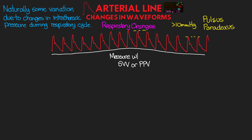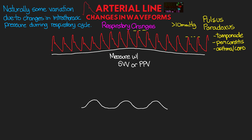This same pulsus paradoxus pattern can be the result of pericardial tamponade, constrictive pericarditis, as well as exacerbations of asthma and COPD. Now depending on if your patient is spontaneously breathing or on the ventilator, that's actually going to change the type of pattern that we see. So let's go ahead and put up a tracing of our patient's respiratory cycle to have as a reference as we talk about these.